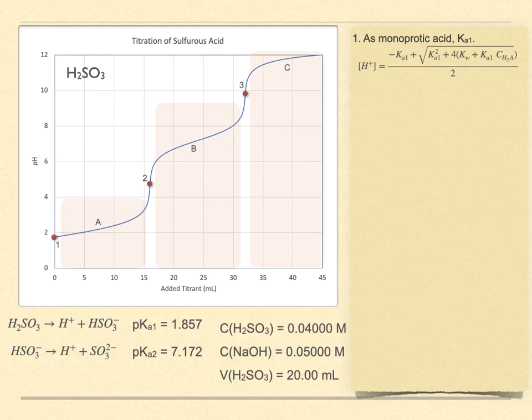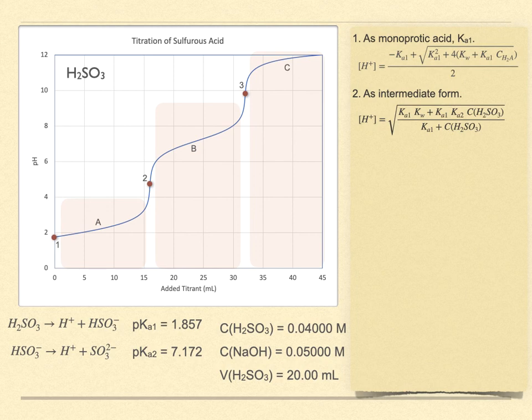Point two is the first equivalence point, and it's treated as if it were just a solution of the intermediate species. The intermediate forms have a separate equation using both dissociation constants. Just treat this as an intermediate species solution. Warning: do not forget to account for dilution of the original formal concentration. You've added 16 milliliters of water to this, so the formal concentration of the intermediate species has decreased compared to the original fully acid species concentration. Just use C1V1 equals C2V2.